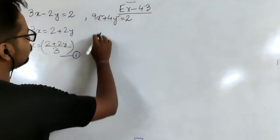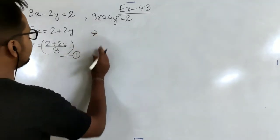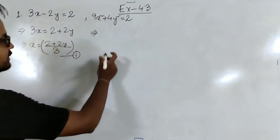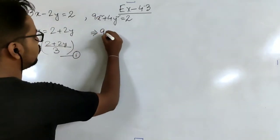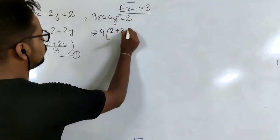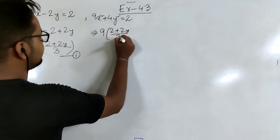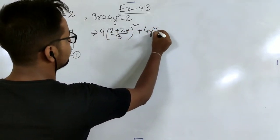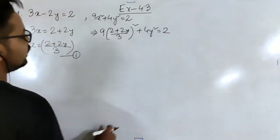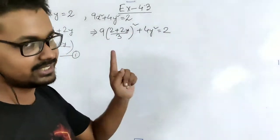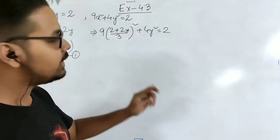Now we move to the quadratic equation and put the value of x in place of x. So we put (2 plus 2y)/3, whole squared, plus 4y squared equal to 2. If we expand, we will find a quadratic equation in a single variable and can solve it accordingly.